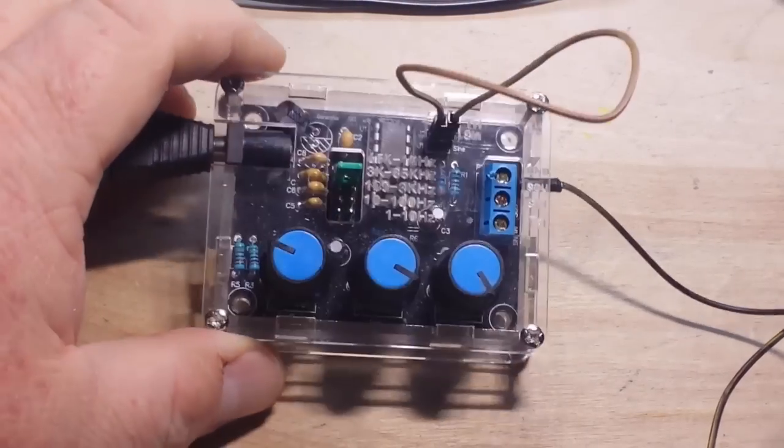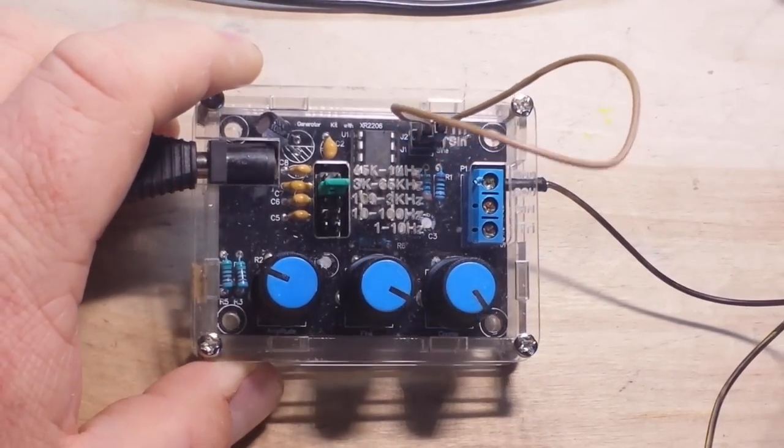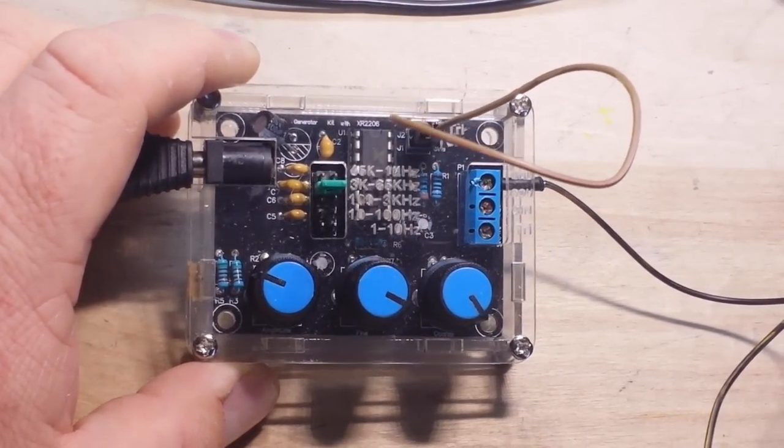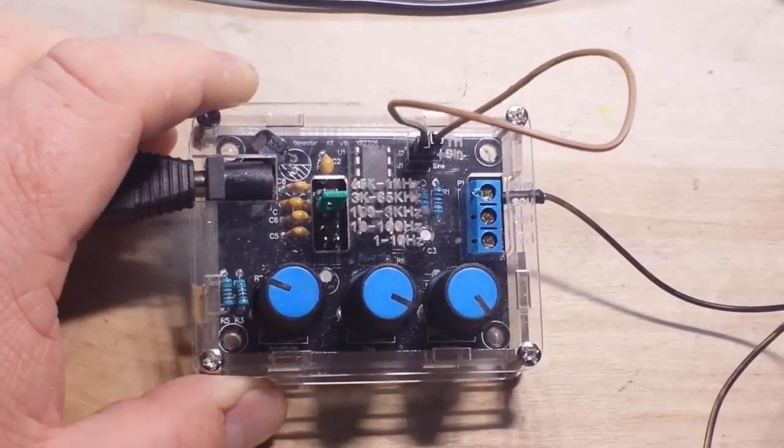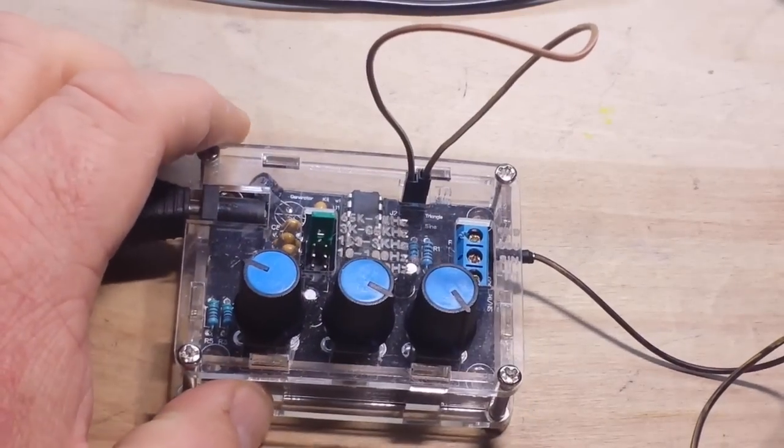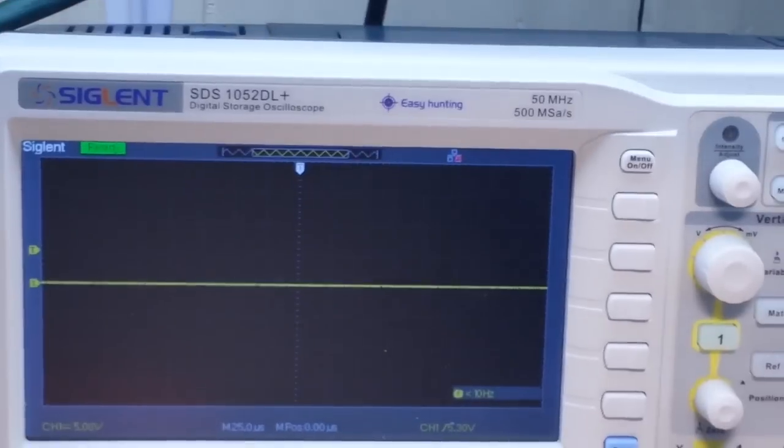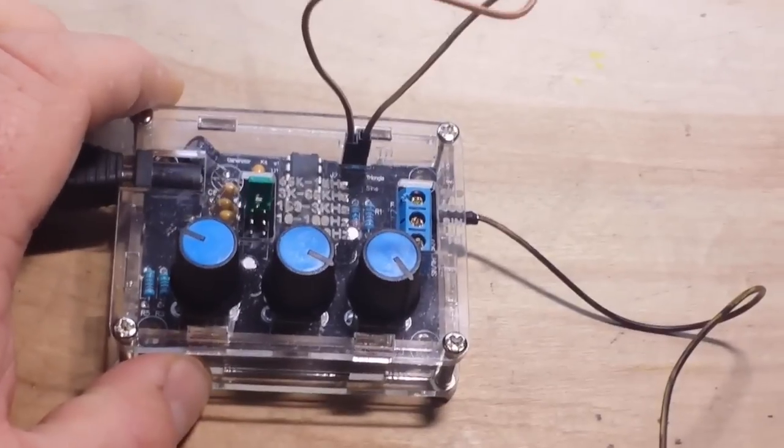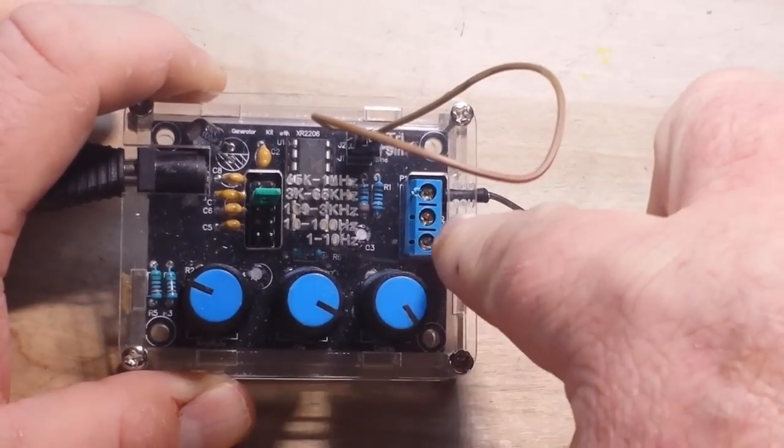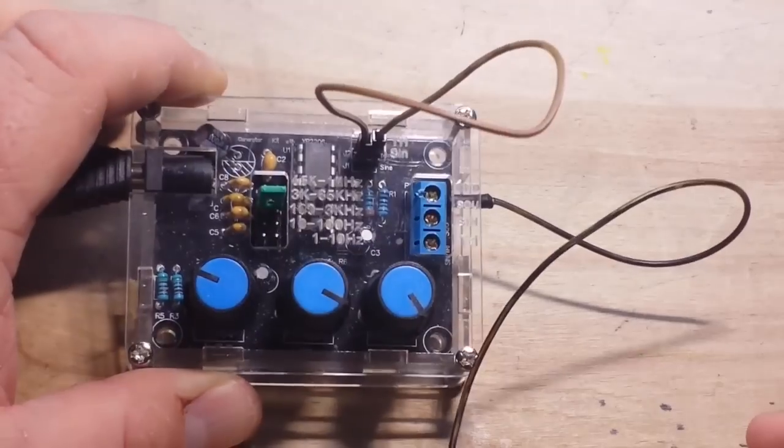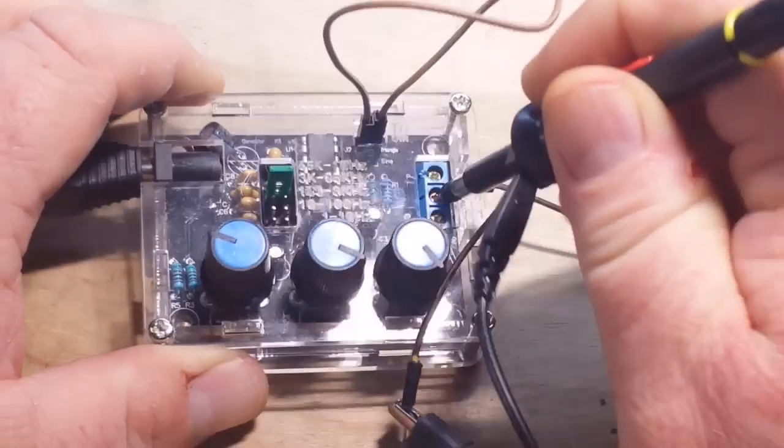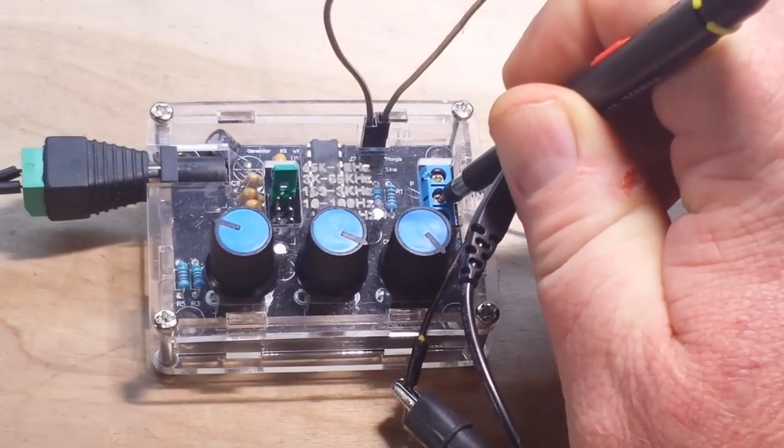Here's one of these old cheapo, I think they're about 10 bucks, function generators you can get off of eBay. I've got a 12 volt source going in and we've got the oscilloscope going up. So let's probe what we've got going on here and we'll take a look at it on the scope. First of all, I'm going to probe this output here and rotate up to look at the scope.